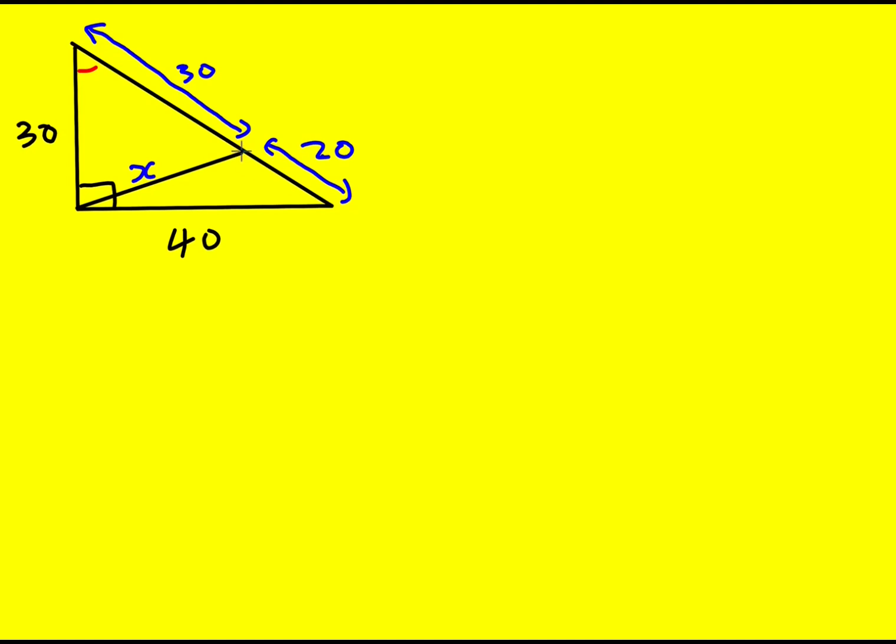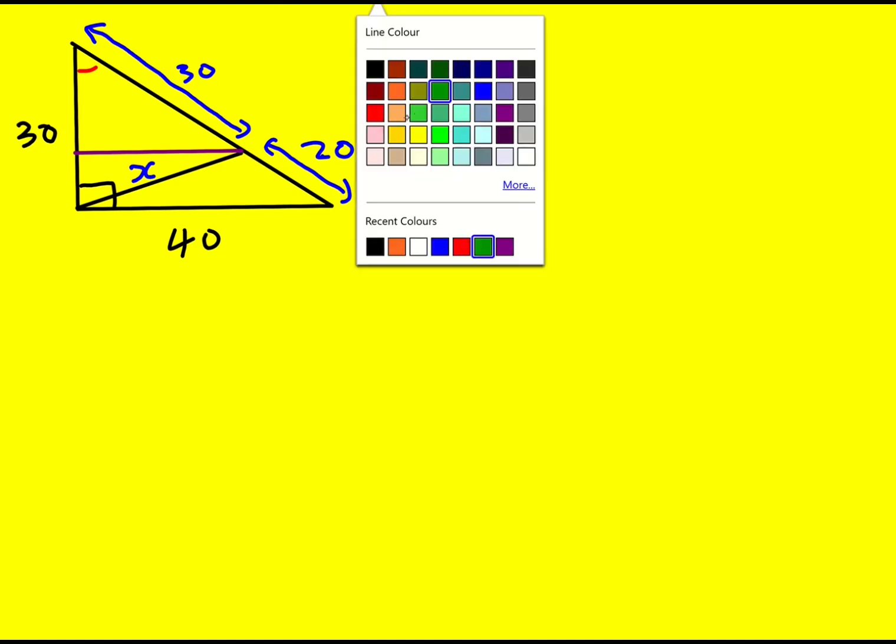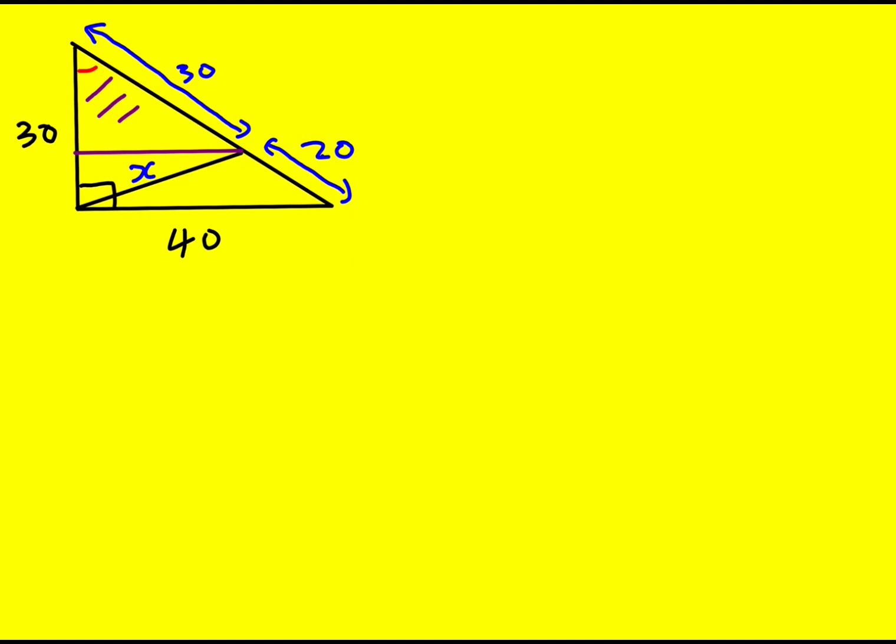It all comes down to similar triangles actually. So we can draw a horizontal across from here and then the triangle that I've just formed. In fact this purple triangle is necessarily going to be similar to the whole triangle. So I'm now going to draw them both out. So this is the big triangle, 40, 30 and 50.